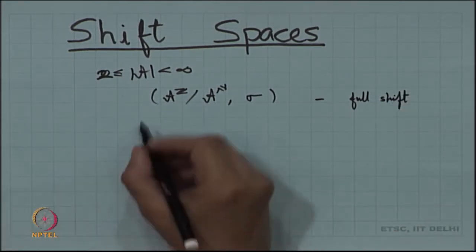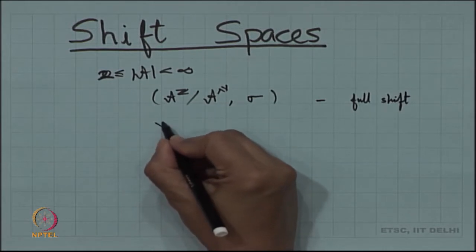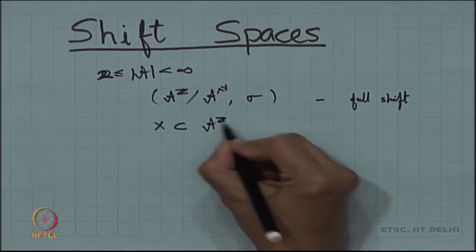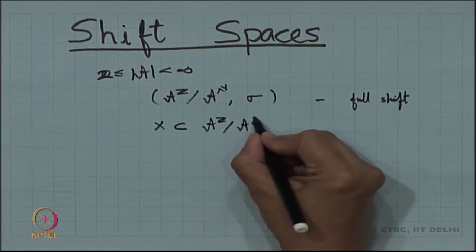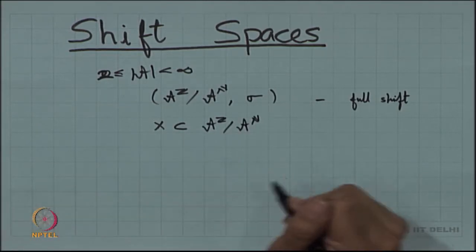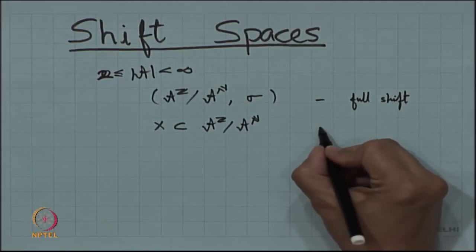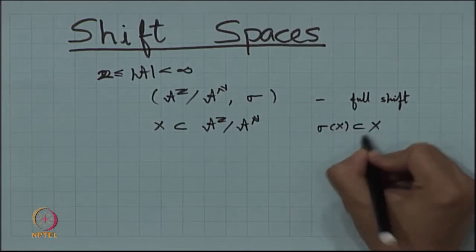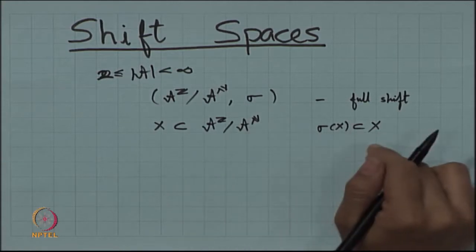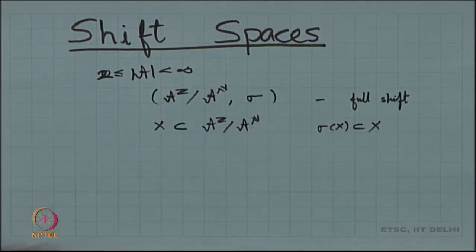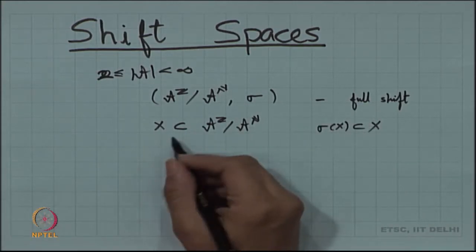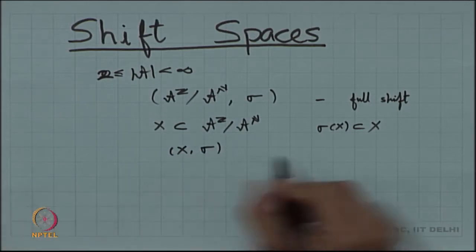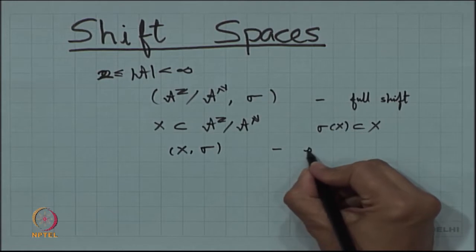The other idea is to use X as a subset of A^Z or A^N — one-sided or two-sided — and then look into those X which are invariant under the shift. So you look into shift-invariant subspaces of the full shift, and that gives rise to another dynamical system which we call a sub-shift.